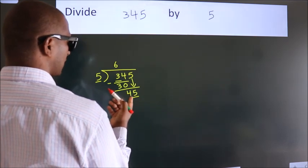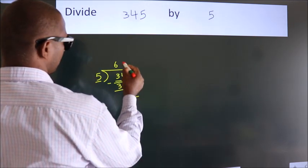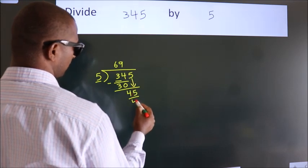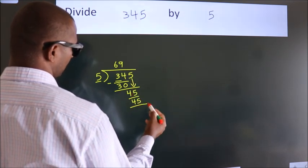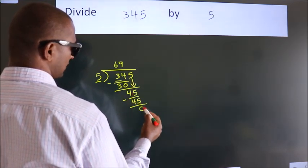When do we get 45 in the 5 table? 5 times 9 is 45. Now we subtract. We get 0.